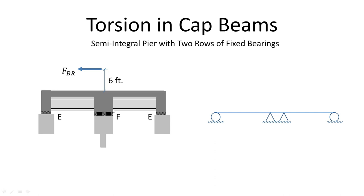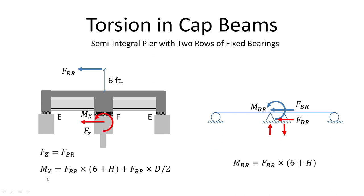Now here is an interesting case: a semi-integral pier cap with two rows of fixed bearings, which is very common for prestressed concrete girder bridges. The two rows of fixed bearings can be idealized as two hinges placed very close to each other. These hinges have the capability of transferring the braking moment to the cap beam by generating large vertical reactions. So in this case, the torque applied on the cap beams will be equal to the braking moment plus the lateral load, which is equal to the braking force multiplied by half the depth of the cap beam.